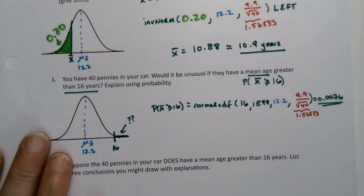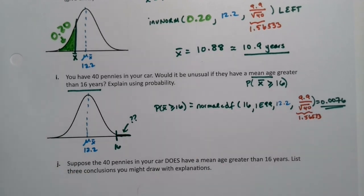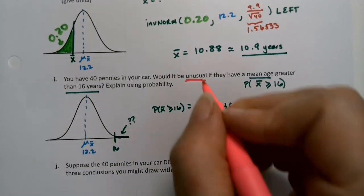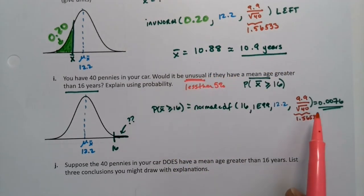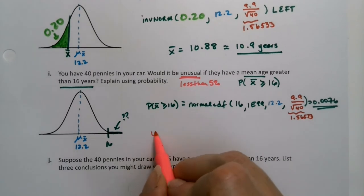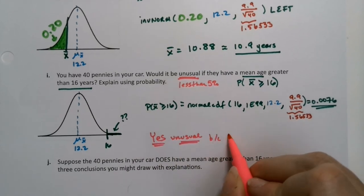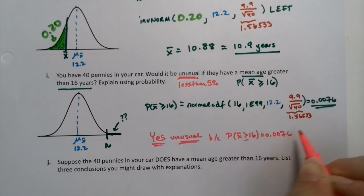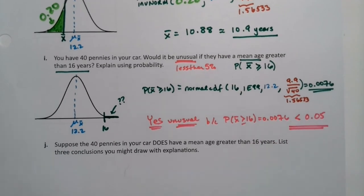Now that didn't answer the question. It just got us on the way. So we've shaded our picture. We've got the probability, but we have to answer the question of would it be unusual? Well, unusual is less than 5%. That's our rule of thumb. So unusual is less than 5%. So would this be unusual? Oh yeah, definitely. So yes, unusual. Because the probability that X bar is greater than 16, greater than equals 16, is .0076, which is less than .05. That's the key part, that this probability is less than 5%.